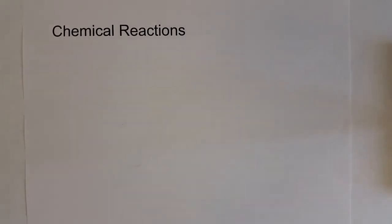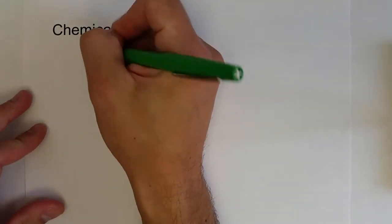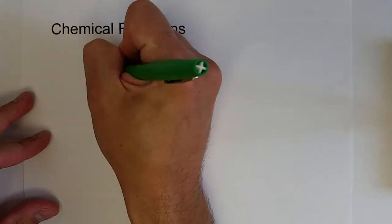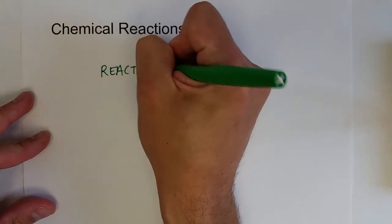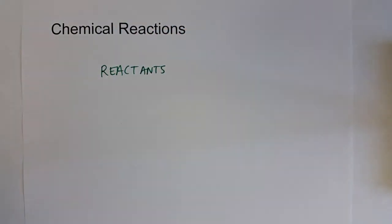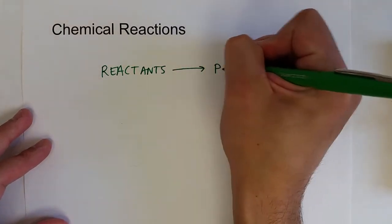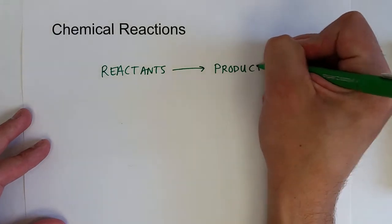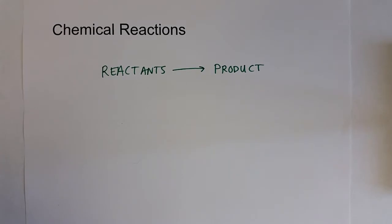The next thing we need to talk about are chemical reactions, because we're eventually going to want to do some calculations involving them. Chemical reactions are when reactants are involved in a chemical change and produce products. That's how we write a chemical equation that represents a chemical reaction.